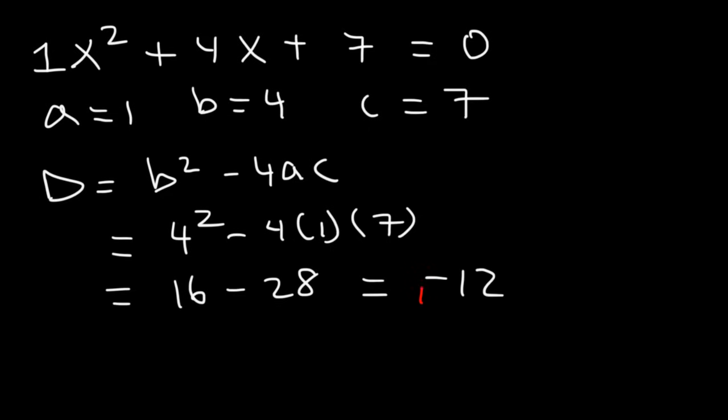Negative 12 is less than zero. So because the discriminant is equal to a negative number, there's going to be two imaginary solutions in the equation represented above.